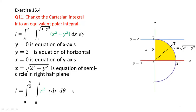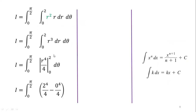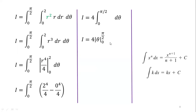Now we evaluate the polar integral. We need to recall two integration formulas. Simplifying r² · r gives r³, and by the power rule its integral is r⁴/4. Applying limits from 0 to 2 gives 2⁴/4 = 4, which is a constant taken outside. For the remaining integral from 0 to pi/2 of d theta, using the formula with k = 1 gives theta, evaluated from 0 to pi/2. Applying the limits, the final answer is 2pi.